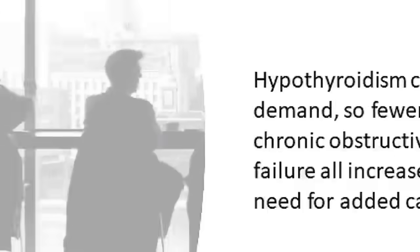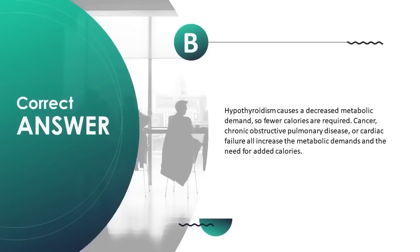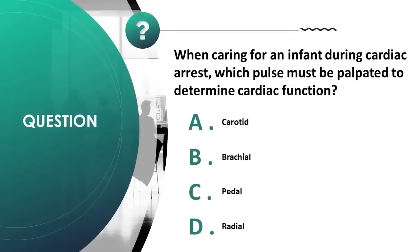Hypothyroidism causes a decreased metabolic demand, so fewer calories are required. Cancer, chronic obstructive pulmonary disease, and cardiac failure all increase the metabolic demands and the need for added calories. When caring for an infant during cardiac arrest, which pulse must be palpated to determine cardiac function? A) carotid, B) brachial, C) pedal, D) radial. Correct answer is B.